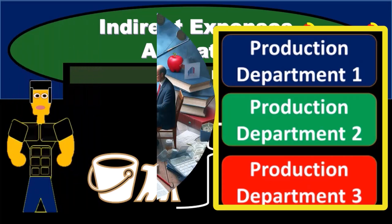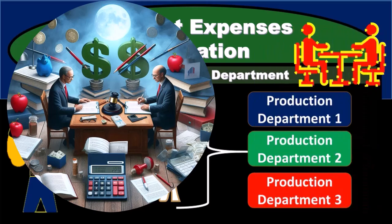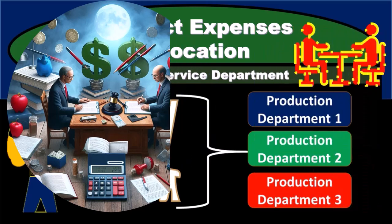The direct expenses are ones that we can track to that department directly, and the indirect expenses are those that we're going to have to allocate to those departments.